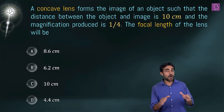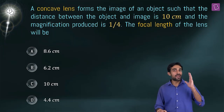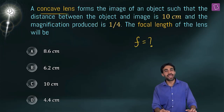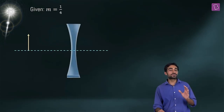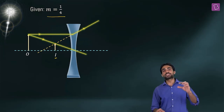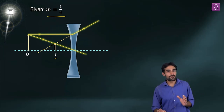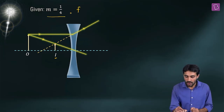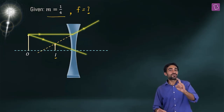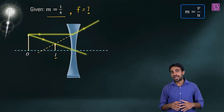A concave lens forms an image of an object such that the distance between object and image is 10 cm and the magnification produced is 1/4. We need to find the focal length of the lens. A concave lens produces a virtual image smaller than the object, consistent with magnification 1/4.